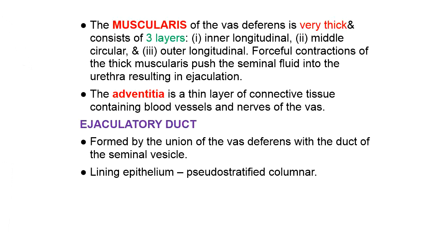The ejaculatory duct forms where the ductus deferens joins the duct of the seminal vesicle. It is a very small duct which pierces the prostate gland and opens into the prostatic urethra. The lining of this duct is also pseudostratified columnar. To summarize, the typical lining epithelium of the male genital ducts — the most identifying feature — is pseudostratified columnar epithelium, and the tall columnar cells, visible in the high-power image, also bear stereocilia.